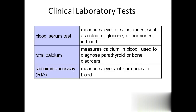Lab tests: to check for hypo or hypersecretion, blood samples are taken and calcium levels calculated. With calcium levels, we can assess hypopituitarism or hyperpituitarism. Glucose levels can be checked for diabetes mellitus and thyroid hormone levels. These are checked in blood serum tests. Total calcium measures the calcium level in the blood to diagnose parathyroid hormone disorders.